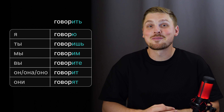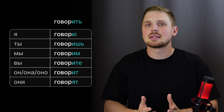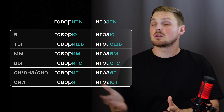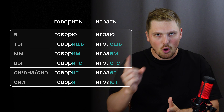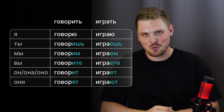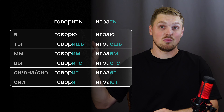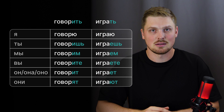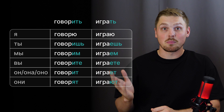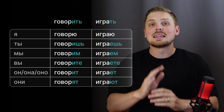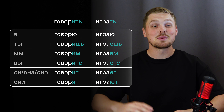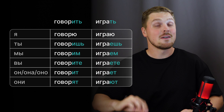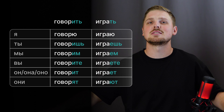The second group must be different from the first somehow. Let's compare them side by side. The endings are different for some of the forms — the highlighted ones are different. There's also a second key difference: with the first group, we only chop off ТЬ, so the vowel А stays in the ending. For the second group, we chop off the whole ending ИТЬ — all three letters — so we don't have И in the conjugated form. That's the main difference: with the first group the vowel stays, and with the second group the entire three-letter ending is removed before adding new endings.